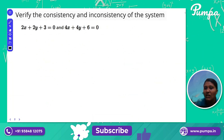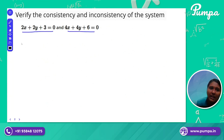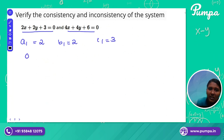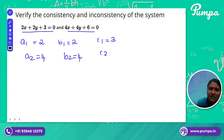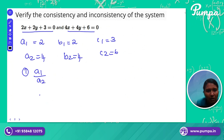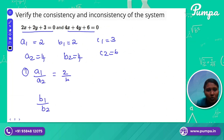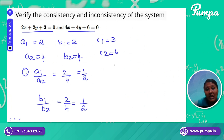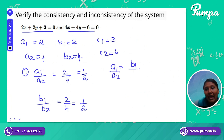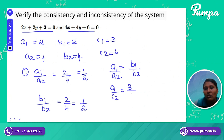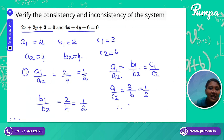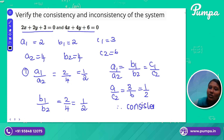Let's determine the standard formula for another problem. We have a1 is 2, b1 is 2, c1 is 3, and a2 is 4, b2 is 4, c2 is 6. Check the condition: A1 by A2 equals 2 by 4, which simplifies to 1 by 2. B1 by B2 equals 2 by 4, which simplifies to 1 by 2. So A1 by A2 equals B1 by B2. Now check C1 by C2: 3 by 6 equals 1 by 2. Since all three ratios are equal, the system has infinitely many solutions. The graphical representation is a coincident line.